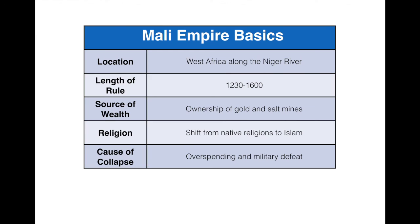The cause of the Mali Empire's collapse was bad rule combined with overspending, and once smaller tribes started going off on their own, the empire couldn't control them and kept losing territory. That's the lesson on the Mali Empire. In our next lesson we'll talk about the last of the three empires — the Songhai Empire. As always, if you have any questions please let me know, and thanks for watching.